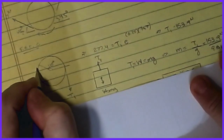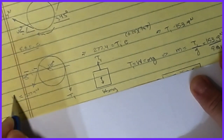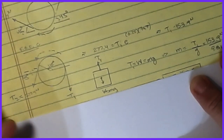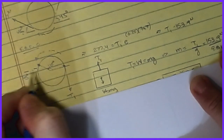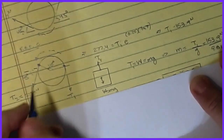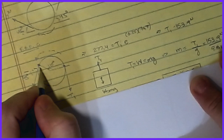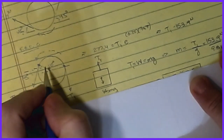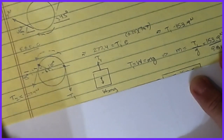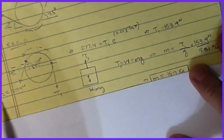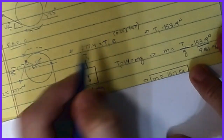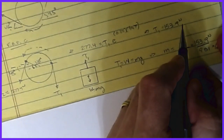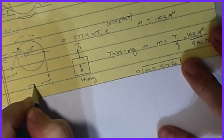At pulley C, the wrap angle is also 135 degrees — going from the 45-degree tangent point, 180 degrees around minus 45 gives 135. Applying the formula again: 277.4 = T1 · e^(0.25 × 3π/4), giving T1 = 153.9 N. That is the maximum tension available to lift the hanging mass.